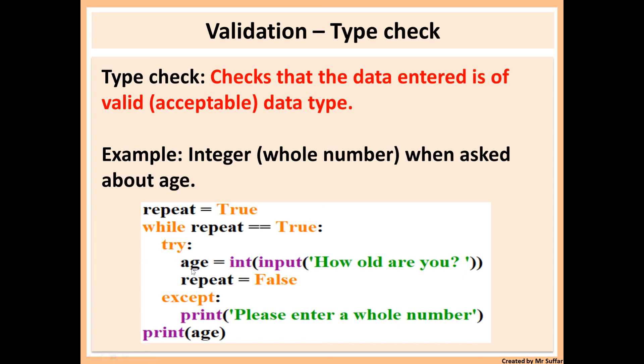What this will do is first it will run this code. Age equals int input will ask for age. Then the user will type their age. If they type their age as an integer, the program will not crash. It will directly set repeat to false and it will stop.